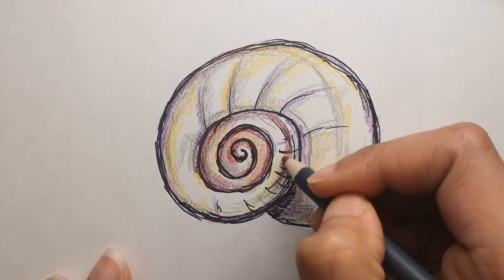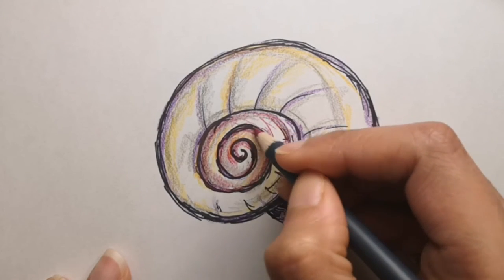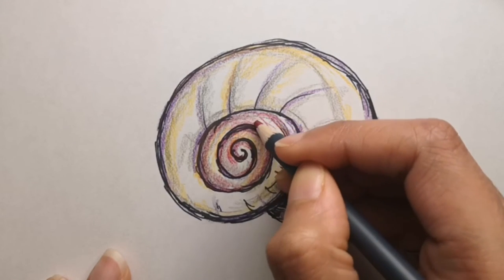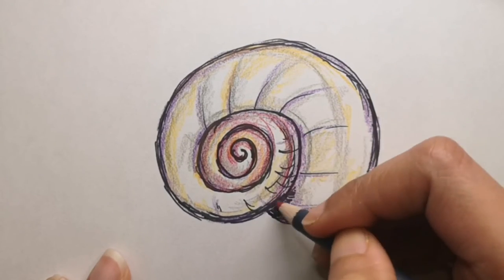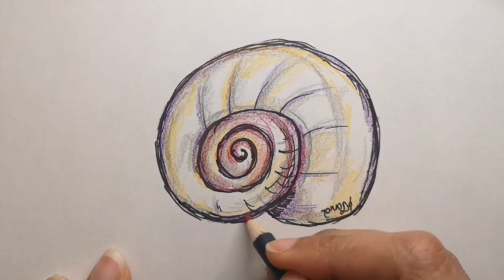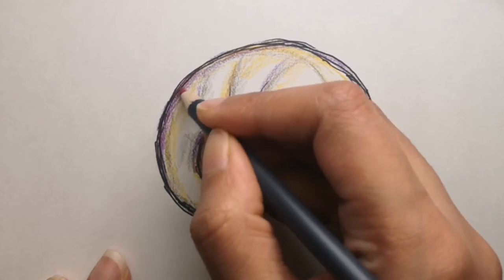There are nearly a thousand species of hermit crab existing today which rely on seashells from dead mollusks to protect their soft abdomens. There you go.